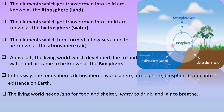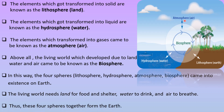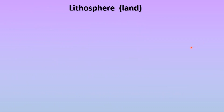The living world needs land for food and shelter, water to drink, and air to breathe. Thus, these four spheres together form the Earth. We shall learn more about these four spheres of planet Earth in this chapter.